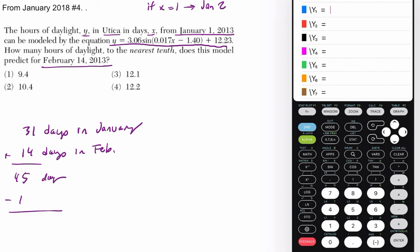So in this case, we don't want to confuse that. We saw here, if X is 1, that's one day from January 1st. So it's 44 days after January 1st.